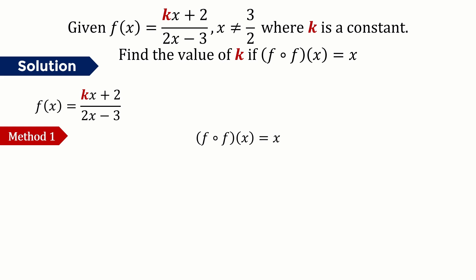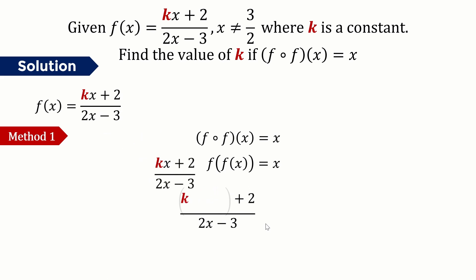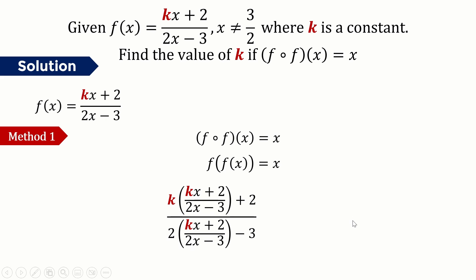For the first method, we know from the information given that f∘f = x, which is equivalent to f(f(x)) = x. What we're going to do is take the function f and substitute x with the function f again — so x in the numerator and the denominator are both substituted with f(x).